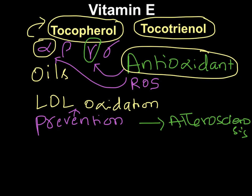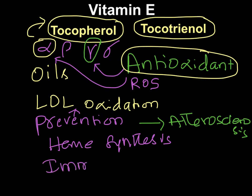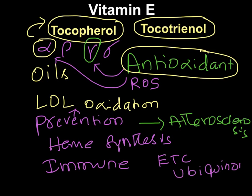Another function of vitamin E is participation in heme synthesis. Vitamin E also plays a role in immune mechanisms, and it prevents macular degeneration in elderly people. Additionally, vitamin E has a role in the electron transport chain — specifically, it stabilizes ubiquinone, a mobile complex in the ETC, thereby participating in cellular respiration.